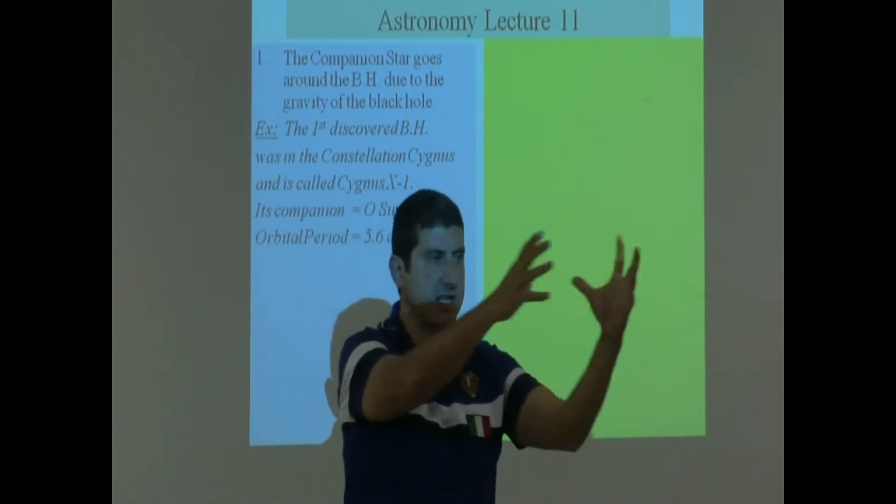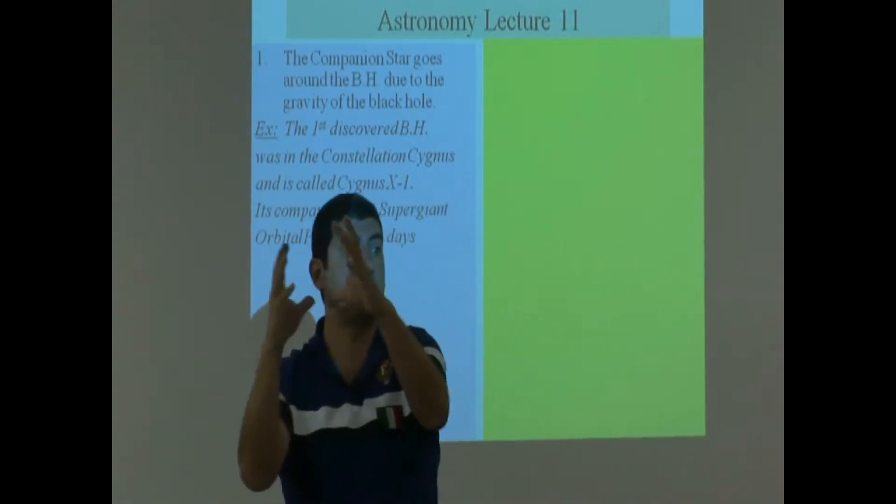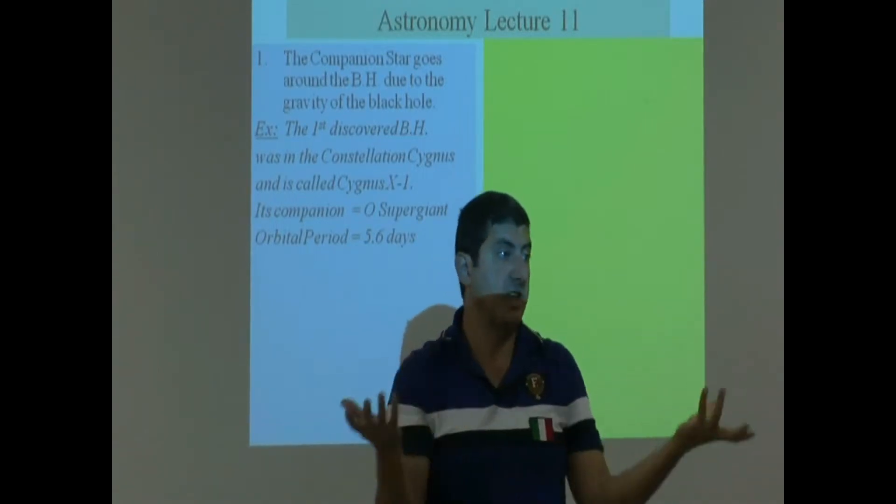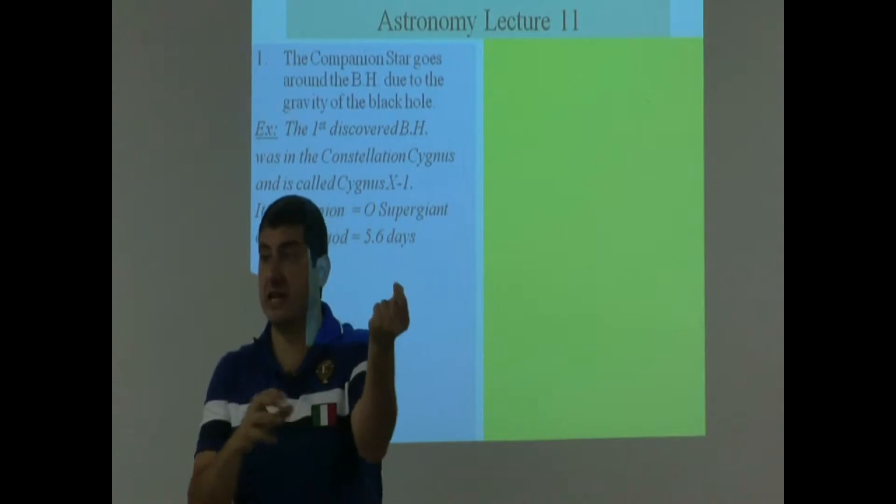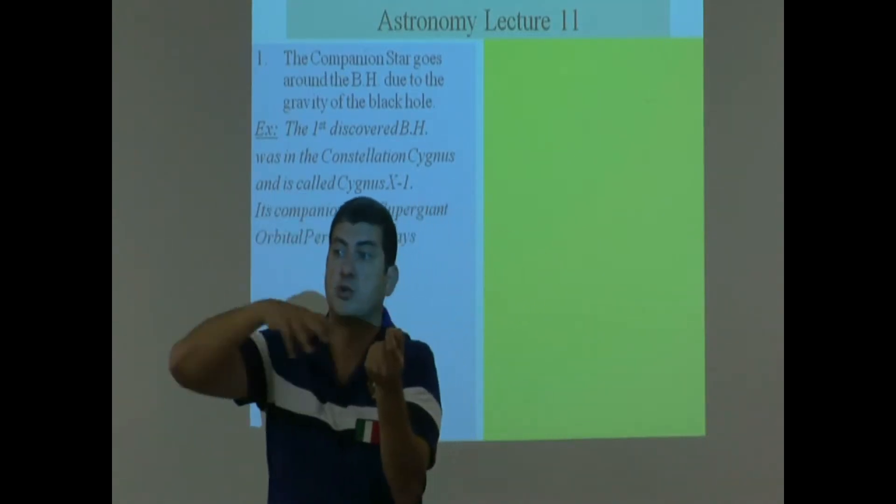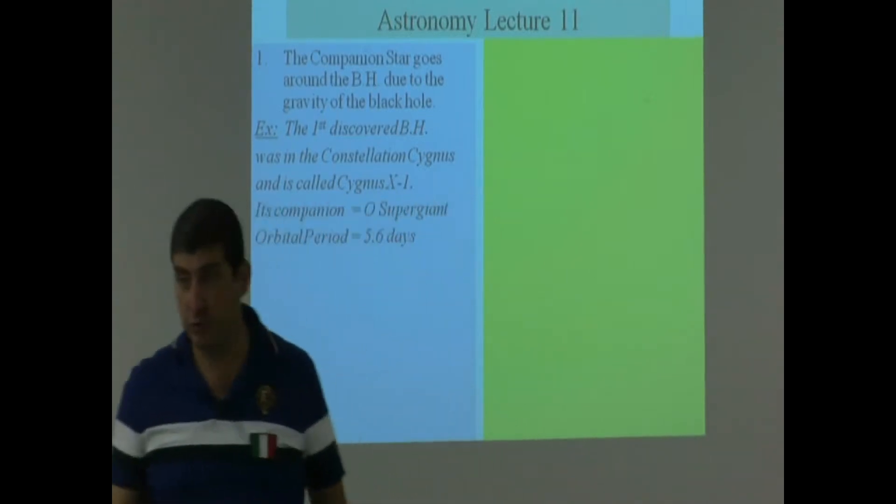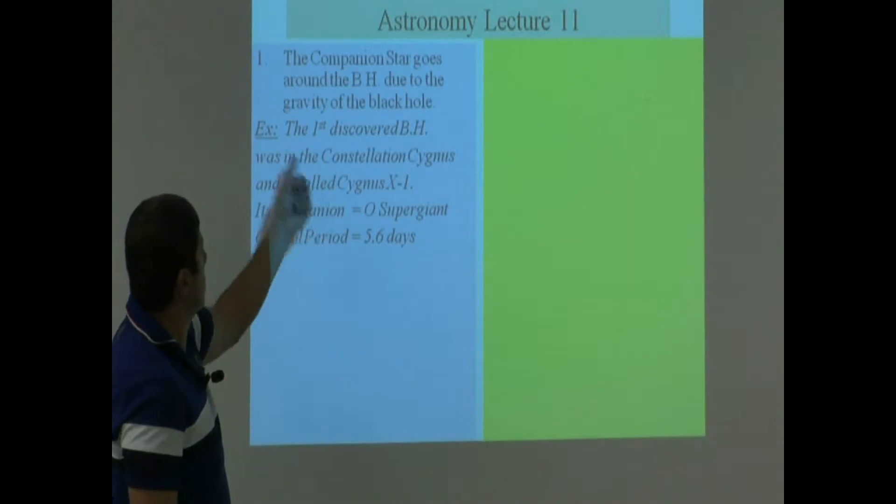Could a star just simply do that by itself? Something must be causing that, right? So you start doing your calculations, you find out there's next to it, there's got to be another star that's very, very heavy. It's a black hole. So basically what's happening is the gravity of the black hole is causing the star to revolve around the black hole. That's one way that we discover black holes. The companion star is going around it.